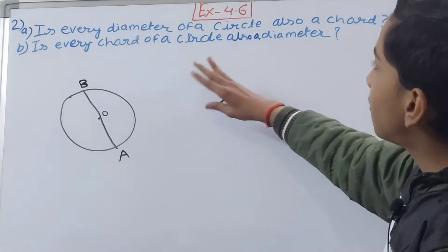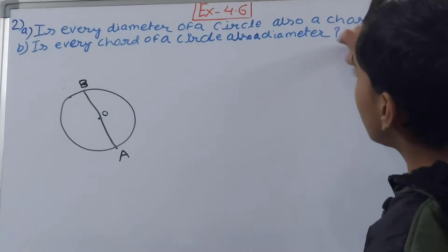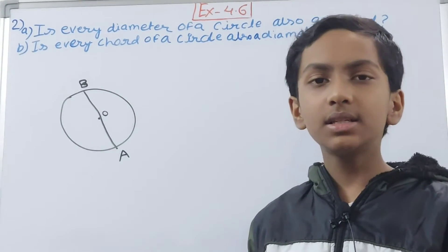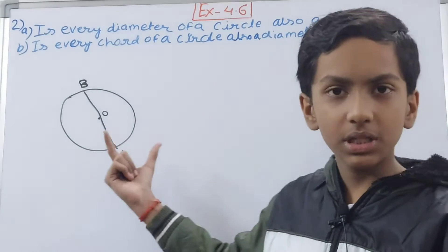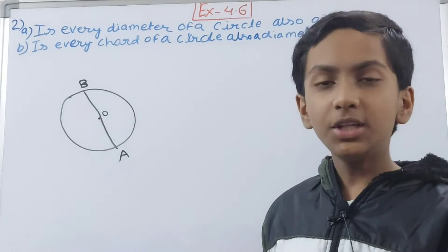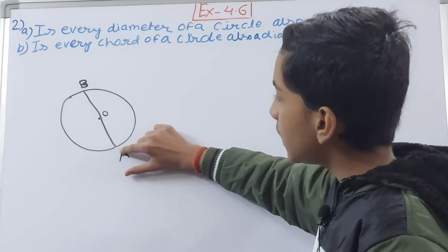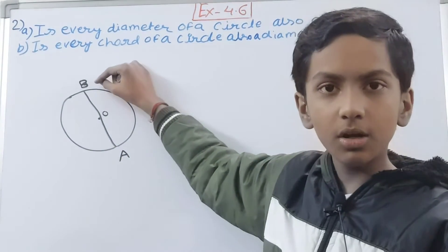Now you can see, is every diameter of a circle also a chord? So it is passing through the center. What does a chord say? It says that it should be a straight line which should connect two points on the boundary.